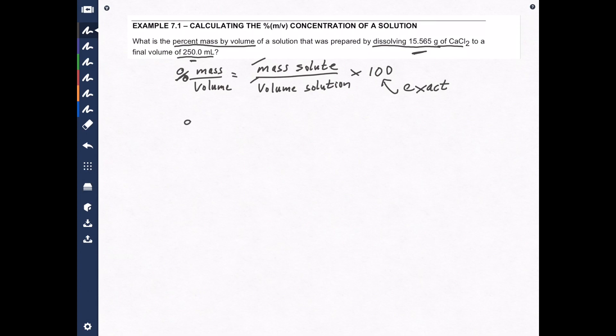Now, percent mass over volume equals this number here, 15.565 grams, divided by the volume, which is right here, 250.0 milliliters, multiplied by 100. Grab your handy-dandy calculator. I'll use my cell phone calculator. Seems to be pretty convenient for everyone these days.